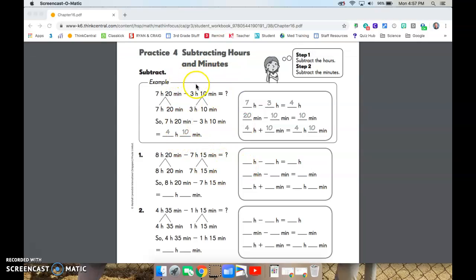So you can look through the example there and you can see how they come up with the four hours and ten minutes. Seven hours minus three hours is four hours. Twenty minutes minus ten minutes is ten minutes, so it's four hours and ten minutes.